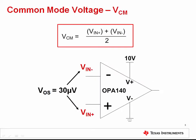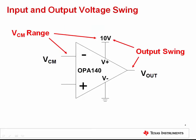Common mode voltage is defined as the average voltage which is applied to the two inputs of an amplifier. In the case of an op amp, the two inputs are at practically the same potential, with only a small voltage offset between them. So effectively, you can see the common mode voltage on either input. Common mode input voltage range is also known as input voltage swing — this term describes the range of input common mode voltages that can be used for normal, linear operation of the amplifier.